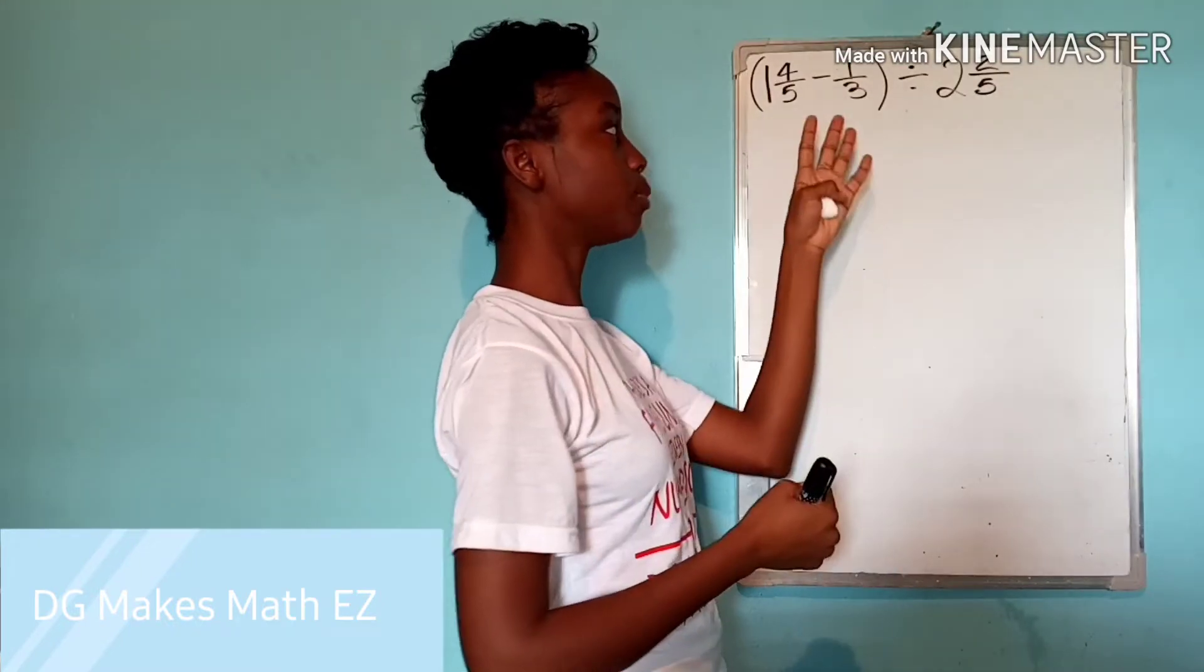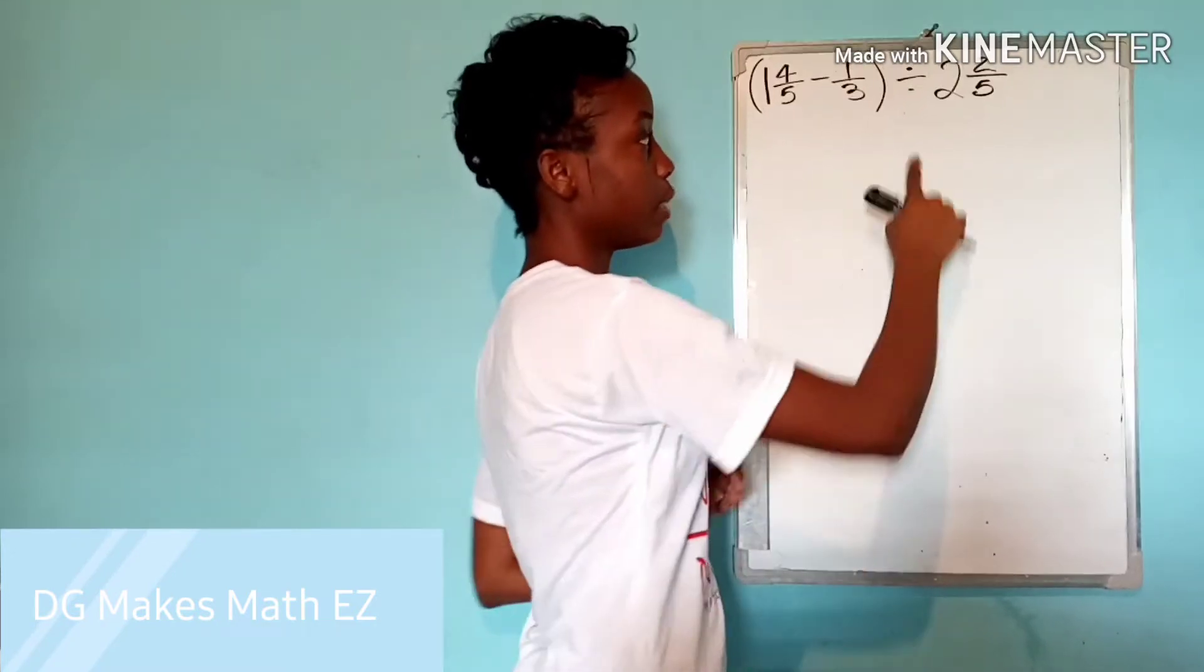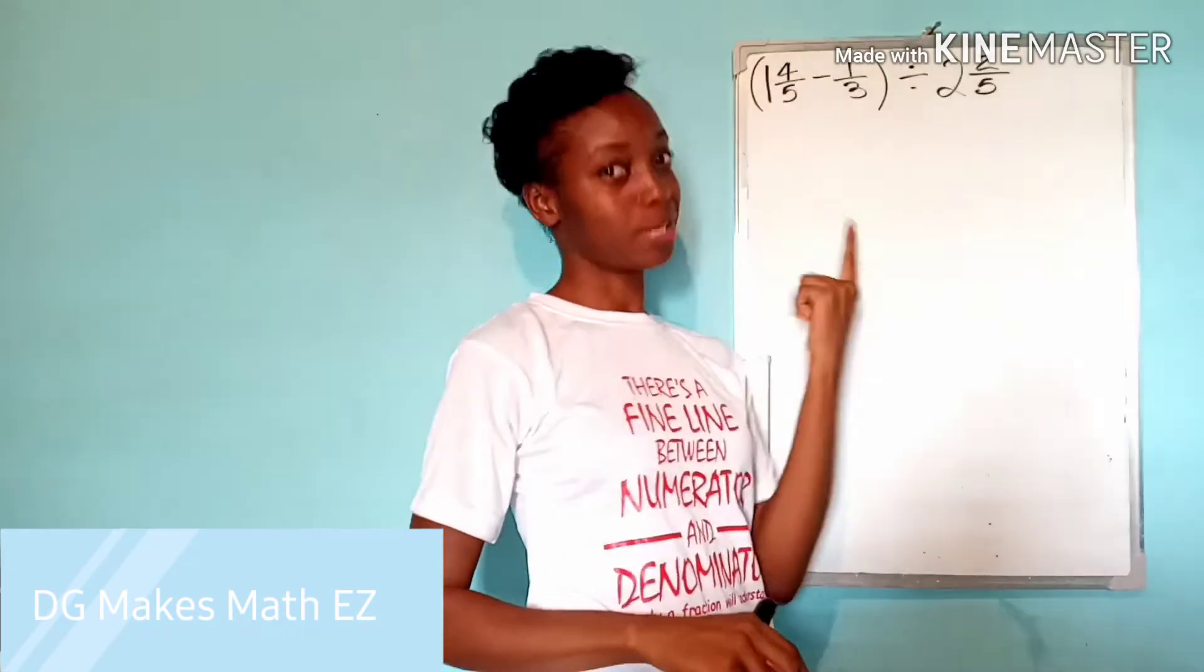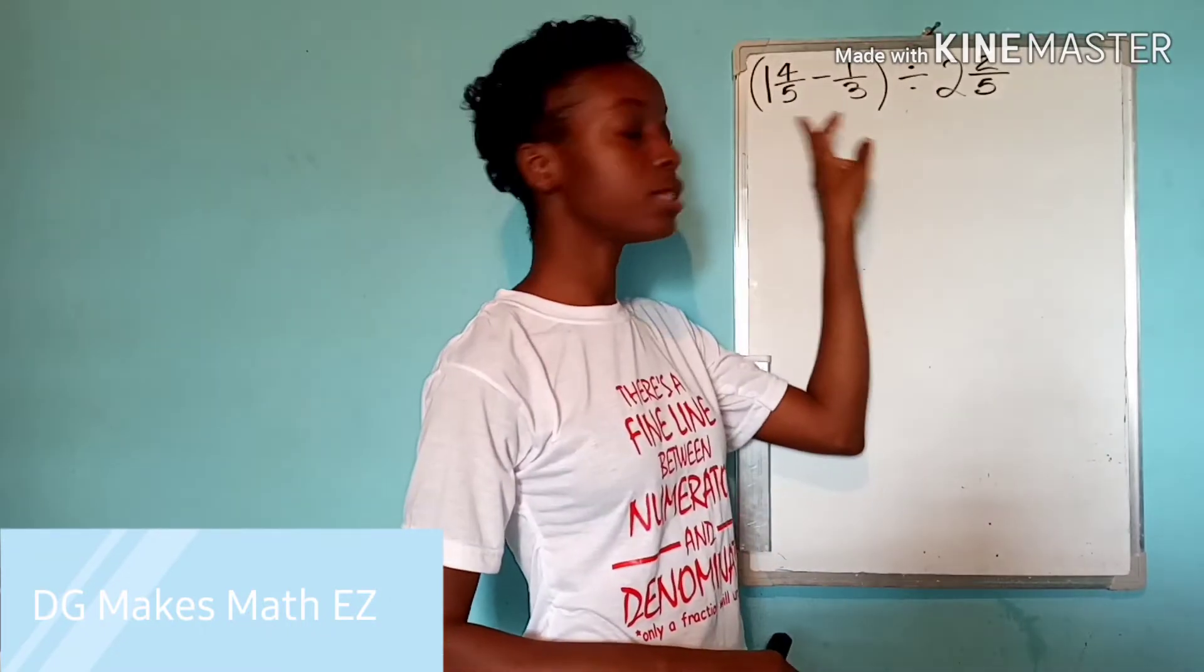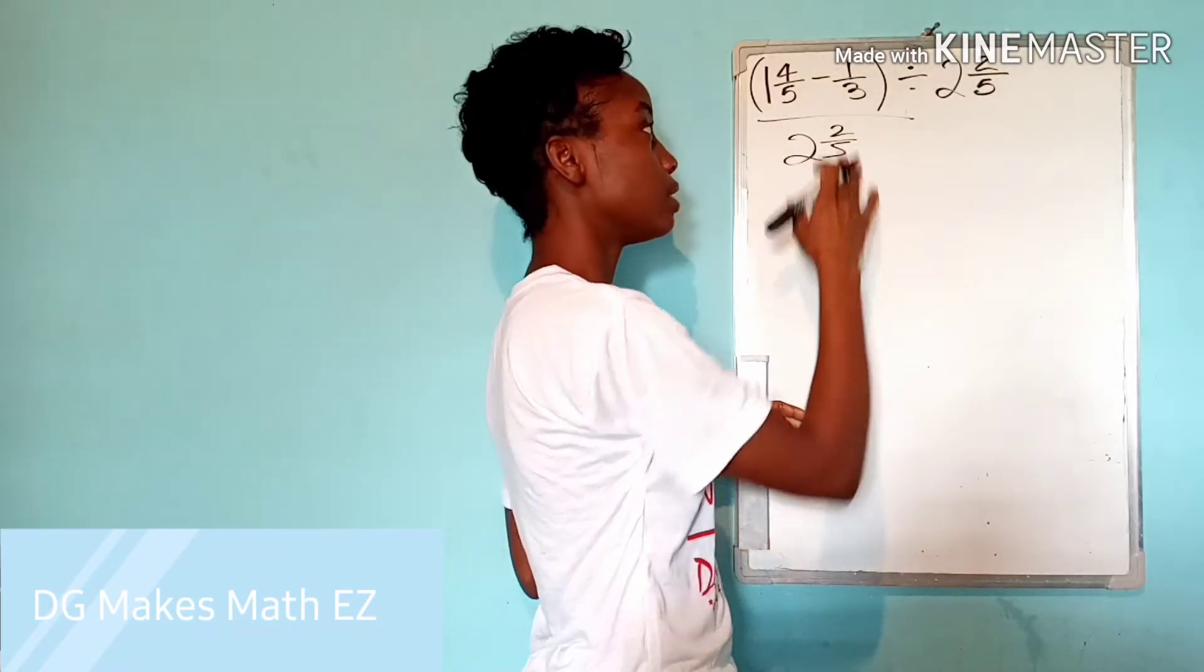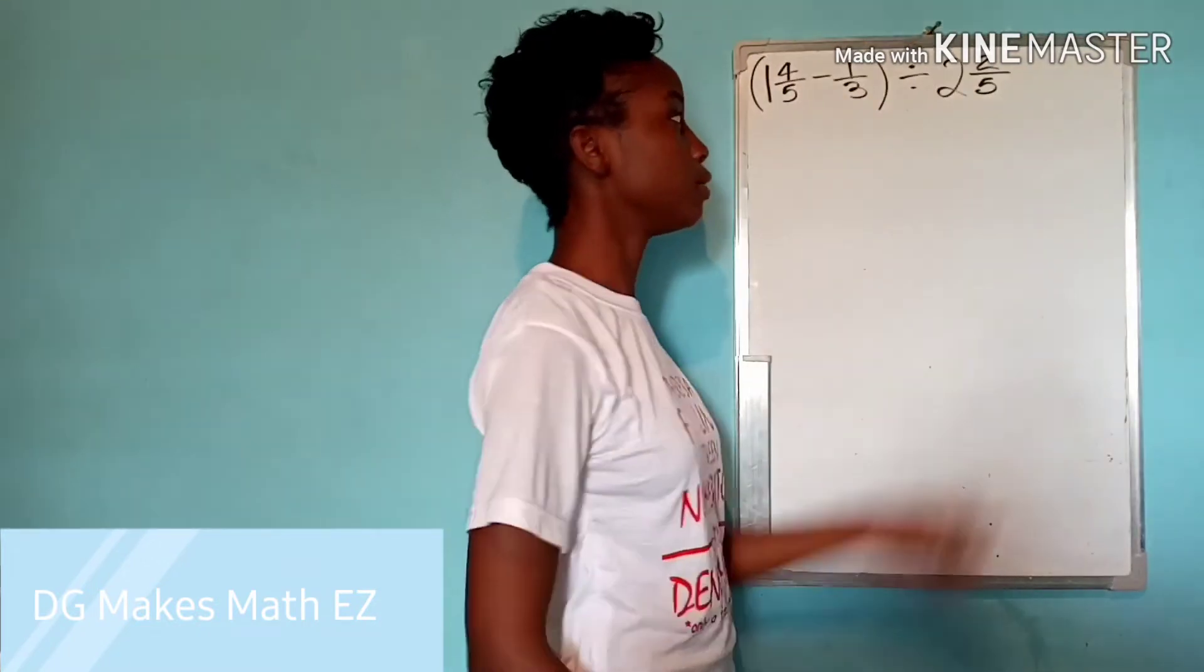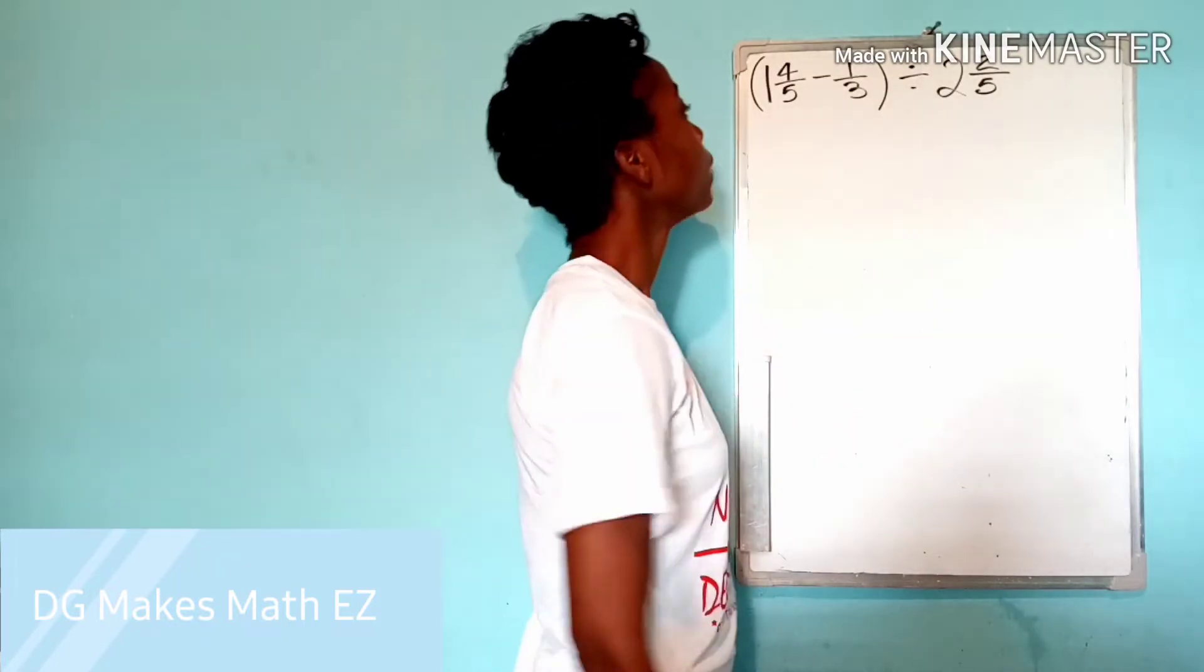One and four fifths minus one third, all of that is being divided by two and two fifths. And since all of it is being divided by two and two fifths, it means that I need to put this in a bracket to show that whatever answer I get here, that is what I'm going to be dividing by two and two fifths. So we rewrite this for two reasons. One, because I need space. And two, you find that a lot of times students totally forget that there was something here to work on.